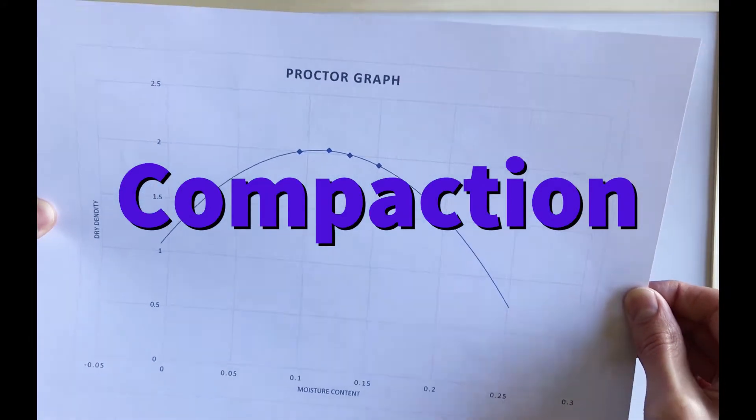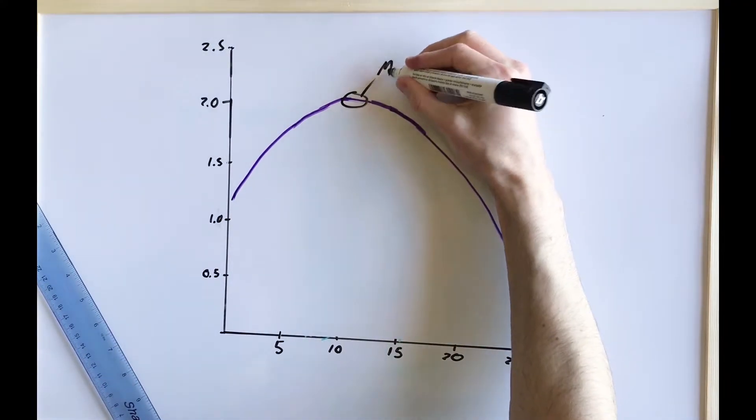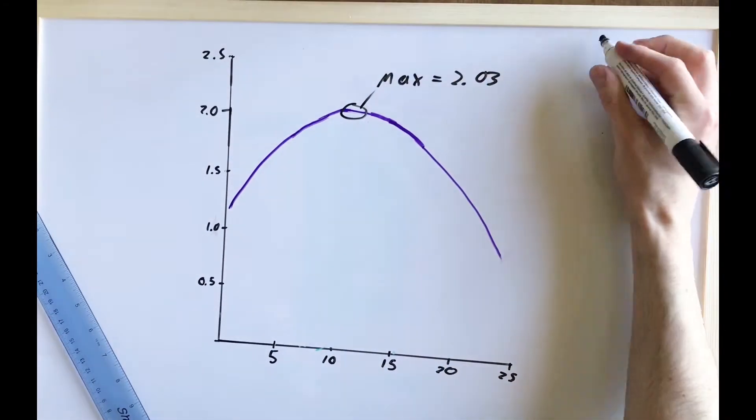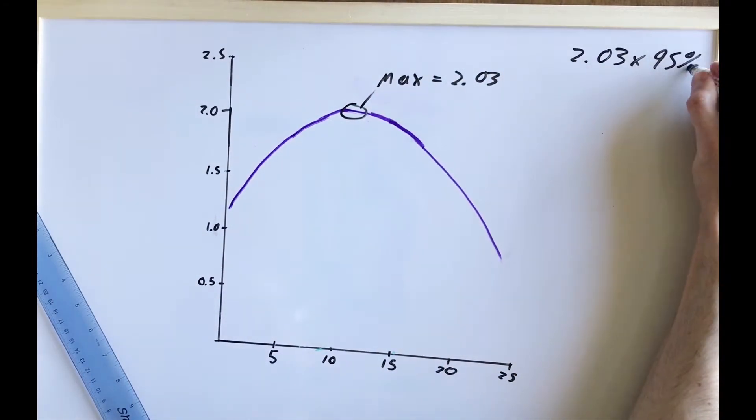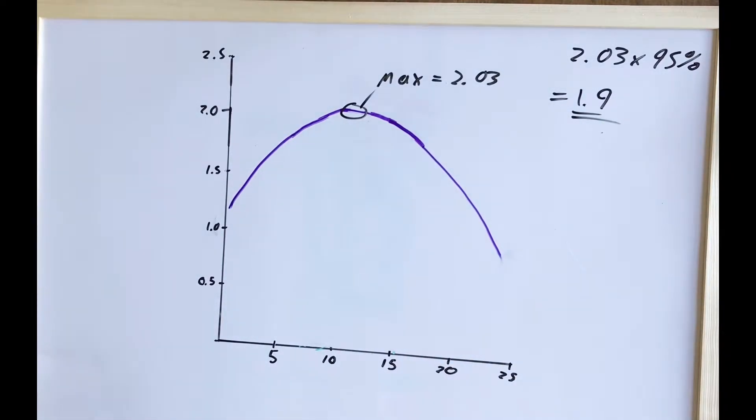Before we get to compaction, we must first examine the lab results further. After our modified proctor test, we were given a set of results which reflected our expected max dry density on site, simulating modern compaction methods better than the standard proctor.